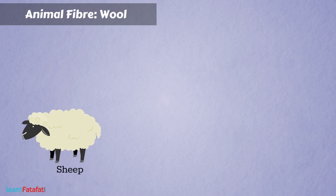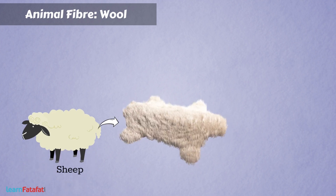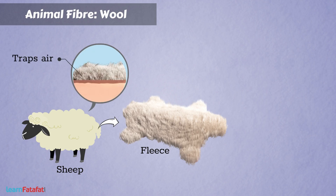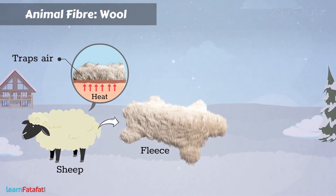Some animals such as sheep have a thick coat of hairy fibres on their body, called fleece. The question is, why do they have such a thick coat of hairs? The reason is simple — fleece traps air. Since air is a bad conductor of heat, heat does not pass from the animal body into the surrounding environment. This helps to keep their body warm.